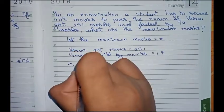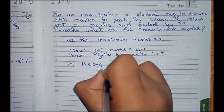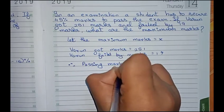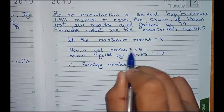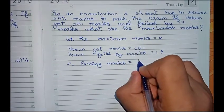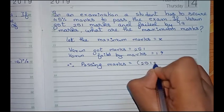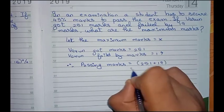So therefore, passing marks equals to the marks he got plus the marks by which he failed. That is 251 plus 19, so that is 270.